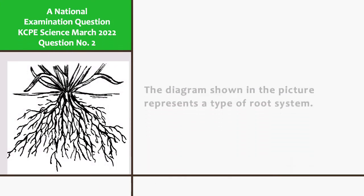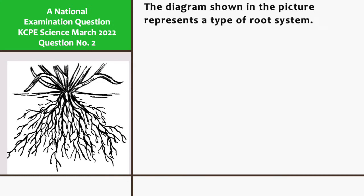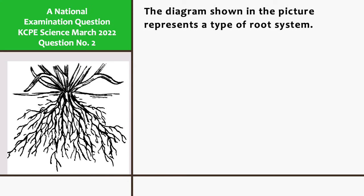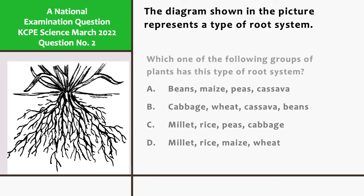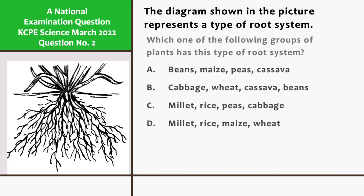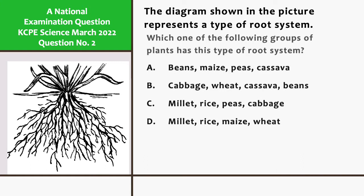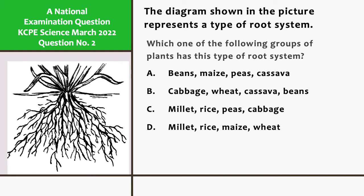The diagram shown in the picture represents a type of root system. Which one of the following groups of plants has this type of root system? A. Beans, maize, peas, and cassava. B. Cabbage, wheat, cassava, and beans. C. Millet, rice, peas, and cabbage. D. Millet, rice, maize, and wheat.